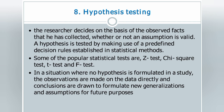The next step is hypothesis testing. The researcher observes the facts collected and decides whether an assumption is valid based on those observable facts. A hypothesis is tested using predefined decision rules established in statistical methods. From the start of the research, the researcher draws all observations and forms assumptions based on those observed facts, then tests whether the assumption is valid using hypothesis testing.